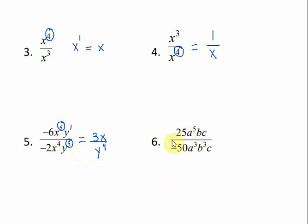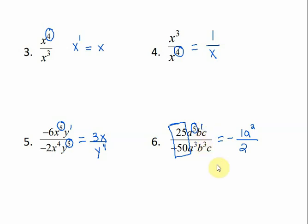For number 6, looking at the numbers: 25 divided by negative 50 — my smaller number is on top, so I won't get a whole number. This reduces to negative one-half. For my a's: a to the 5th divided by a to the 3rd — 5 minus 3 is 2, and a squared goes on top. For my b's: b to the 1 divided by b to the 3rd gives b squared on the bottom. For c: c divided by c is 1, and 1 times anything is itself, so we say it cancels out — it's really dividing out. I don't need to put that 1 there because I have something holding the place on top.